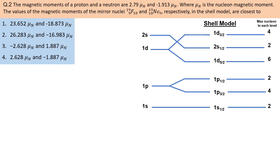Kisi bhi nucleus ka magnetic moment shell model se calculate karne ke liye hamen us nucleus mein maujood sabhi nucleons — proton aur neutron — ko shell model mein fill up karna hota hai. Protons aur neutrons milkar total magnetic moment produce karte hain. Agar nucleons even number mein hain to unka magnetic moment mein contribution 0 hota hai. Fluorine nucleus mein 9 proton aur 10 neutrons hain. Chuki number of neutrons even hai, isliye uska magnetic moment mein contribution 0 hoga, jabki number of protons odd hain isliye magnetic moment mein poora contribution proton ka hi hoga.